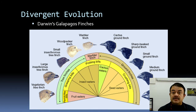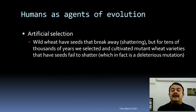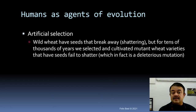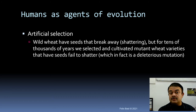Divergent evolution, as seen in Darwin's Galapagos finches, is a result of adaptation and adaptive radiation — itself a proof of evolution. Artificial selection is also a form of evolution with a human mediator. For example, wild wheat has seeds that shatter, but for tens of thousands of years we have selectively cultivated mutant varieties whose seeds fail to shatter — which is actually deleterious for the plant's own survival. The traits selected for human advantage are quantitative trait loci (QTL), which are often deleterious for the species.